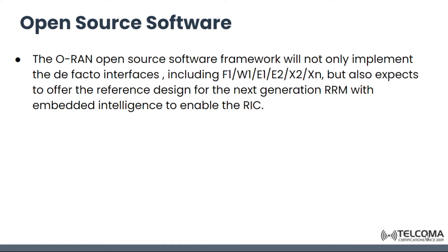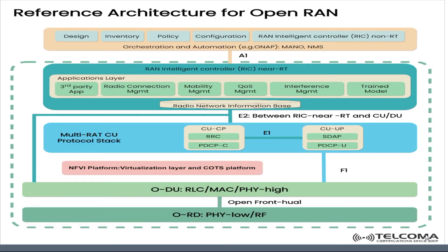Over an open source software platform, they will not only implement the de facto interfaces — F1, W1, E1, E2, XN — but also expect to offer designs for next-generation radio resource management with embedded intelligence to enable the RIC. This is the reference architecture for the open RAN.